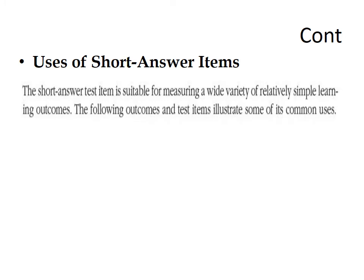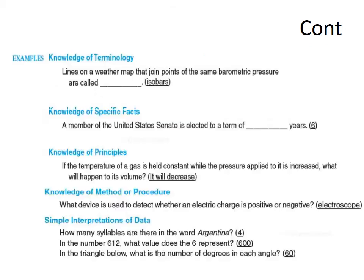Uses of short answer items: The short answer item is suitable for measuring a wide variety of relatively simple learning outcomes. Short answer items can be constructed when we want to test knowledge of terminology, ask questions about specific facts, principles, methods or procedures, or when we want students to interpret data.